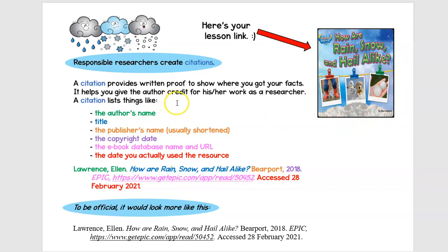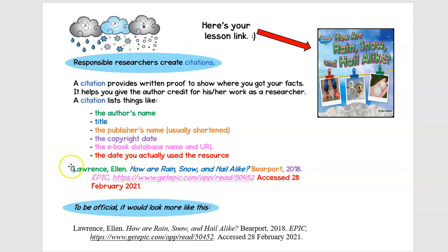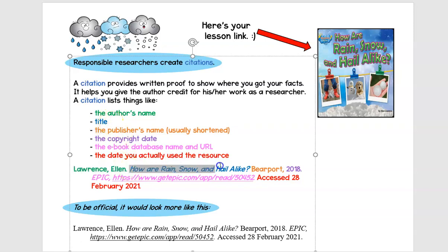A citation helps you give the author credit for his or her work as a researcher. This is a citation right here. A citation includes some of the things on this list, and I've color-coded them to help you see how it all works. The very first thing you always need is the author's name. Just like in the library, last name goes before the first name. So Ellen Lawrence is the author, but in a citation we're going to put Lawrence, Ellen. The second thing in a citation is your title — here's the title of the book: How Are Rain, Snow, and Hail Alike? And you'll notice the title is in italics.